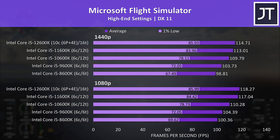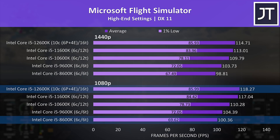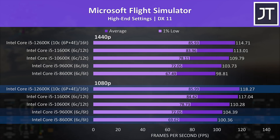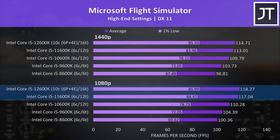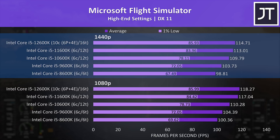Microsoft Flight Simulator was tested in the Sydney landing challenge. 12th gen reached a 19% higher average frame rate than 8th gen at 1080p, 13% higher than 9th gen, 7% higher than 10th gen, and just 1% or 1 FPS difference compared to 11th gen, with similar improvements between generations at the higher 1440p resolution too.